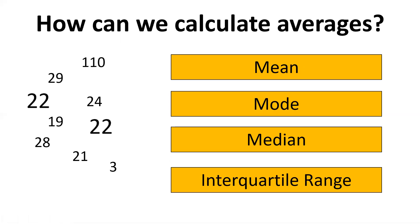The median is fairly easy to do. You simply put the numbers in order from the lowest number to the highest number. So we go from 3 at the bottom to 110 at the top and then you simply find the number that's in the middle and that is the median.